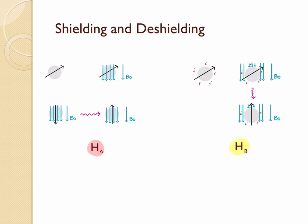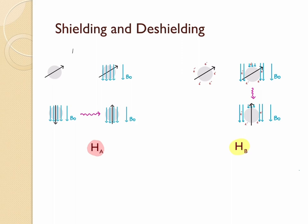Let's use some pictures to understand shielding and deshielding. Let's take two different nuclei, Ha and Hb, present in two different chemical environments. Ha doesn't have any electrons around it, so it is in an electron-poor environment, whereas Hb has a bunch of electrons around it and is in an electron-rich environment. The magnetic moments of each of these nuclei are oriented in a certain direction. When you apply an external magnetic field represented by B0, you put the sample inside the NMR machine and the magnet causes the magnetic moment of the nucleus to align with the field.